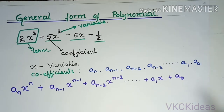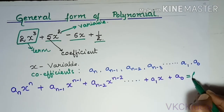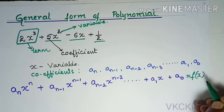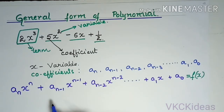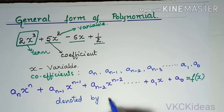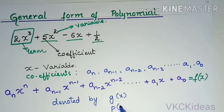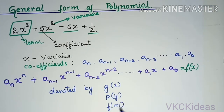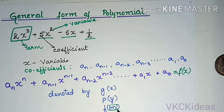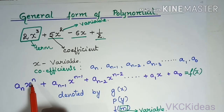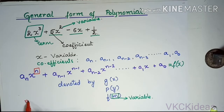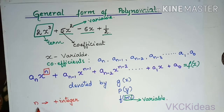If we want to denote this polynomial in terms of x, we simply write it as f(x). The term inside the bracket tells us about the variable used in the polynomial. We should keep in mind that n here is a positive integer which is the highest one, and hence it is also the degree of the polynomial.